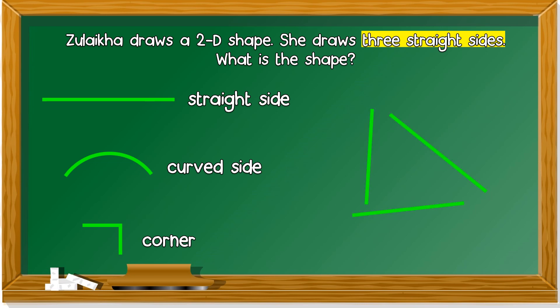So, 1, 2, 3 - three straight sides. What is the shape? Yes, it's a triangle.